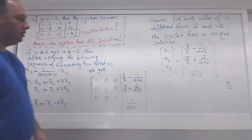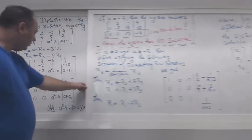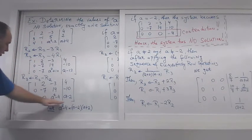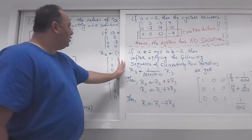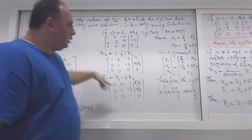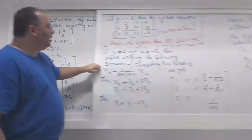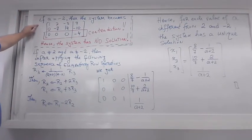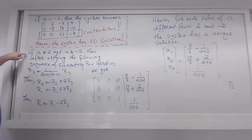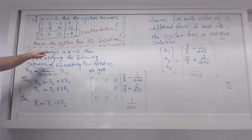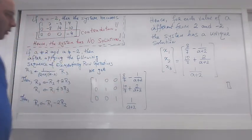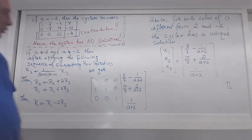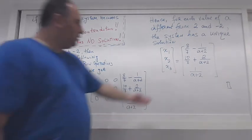To summarize the method: first perform row reduction to reach an expression form, then identify the problematic values of A from the expressions — in our case 2 and -2. Check a = 2: infinitely many solutions. Check a = -2: no solution due to contradiction. For all other values of a (not 2 and not -2): perform further row operations to reach reduced row echelon form, which here yields a unique solution.